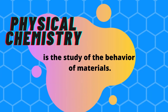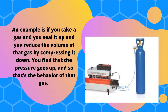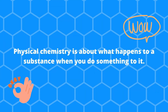Physical chemistry. Physical chemistry is the study of the behavior of materials. An example is if you take a gas and you seal it up and you reduce the volume of the gas by compressing it down, you find that the pressure goes up, and so that's the behavior of the gas. Physical chemistry is about what happens to a substance when you do something to it.